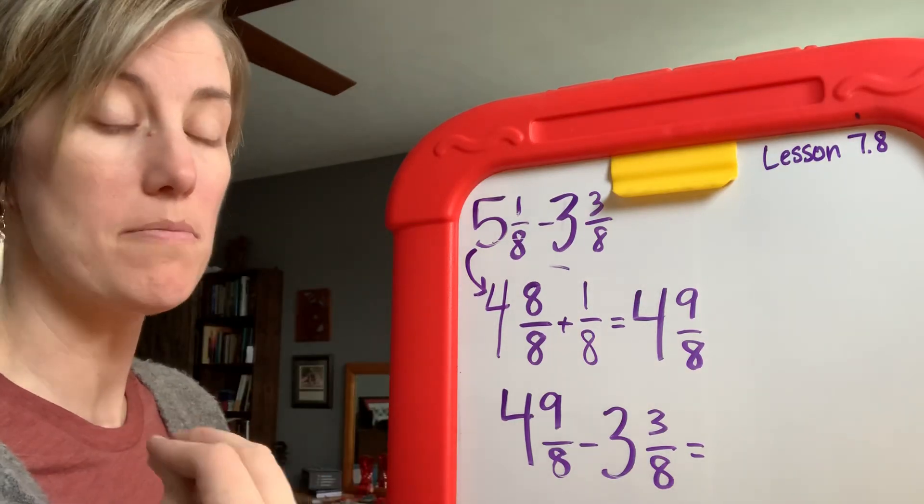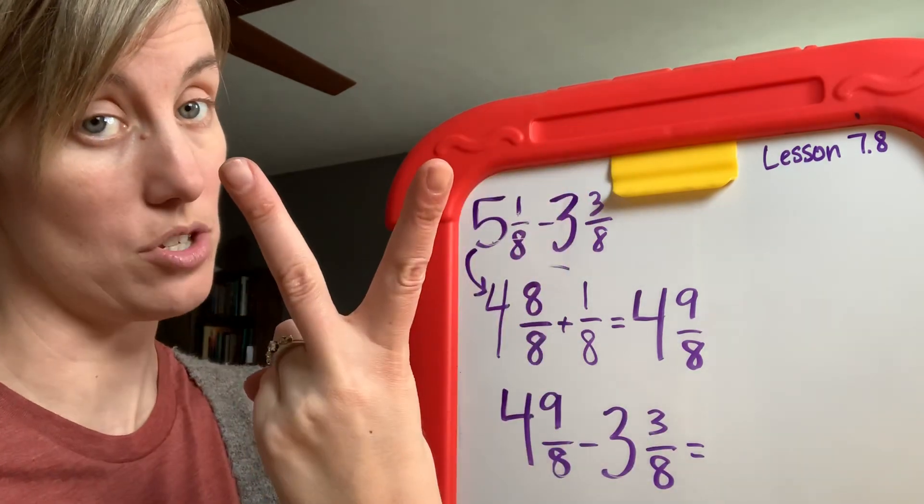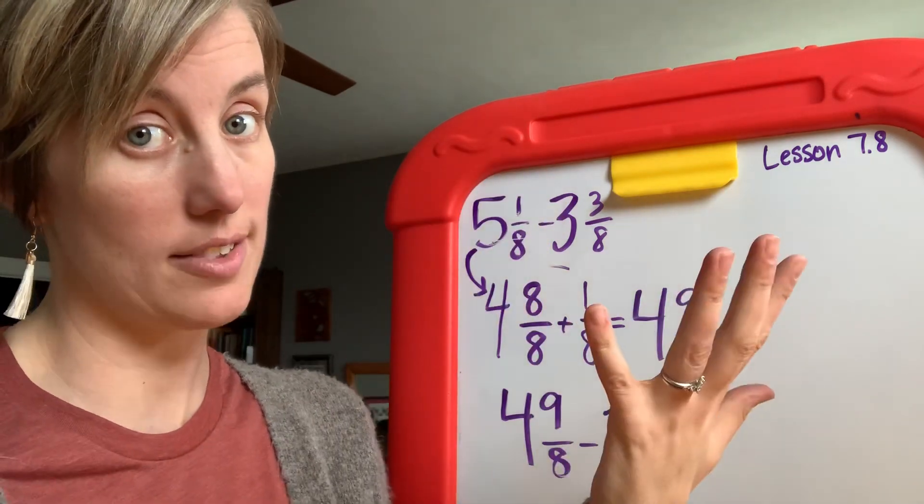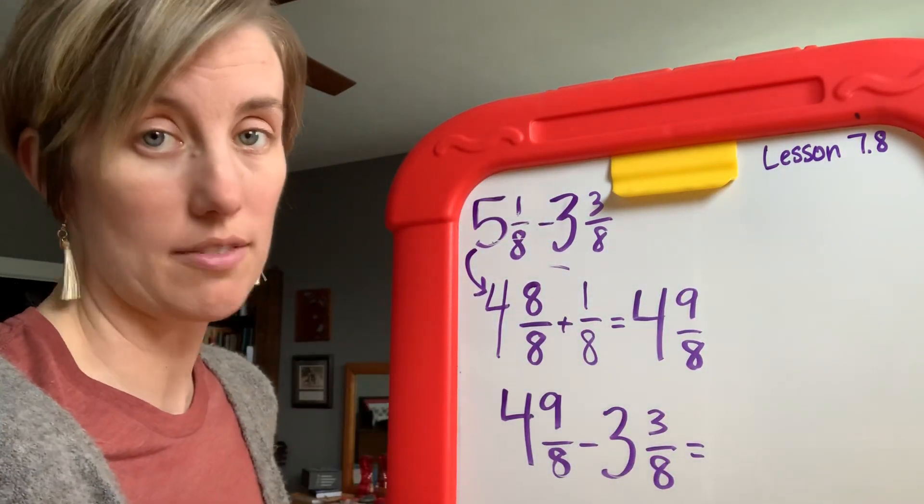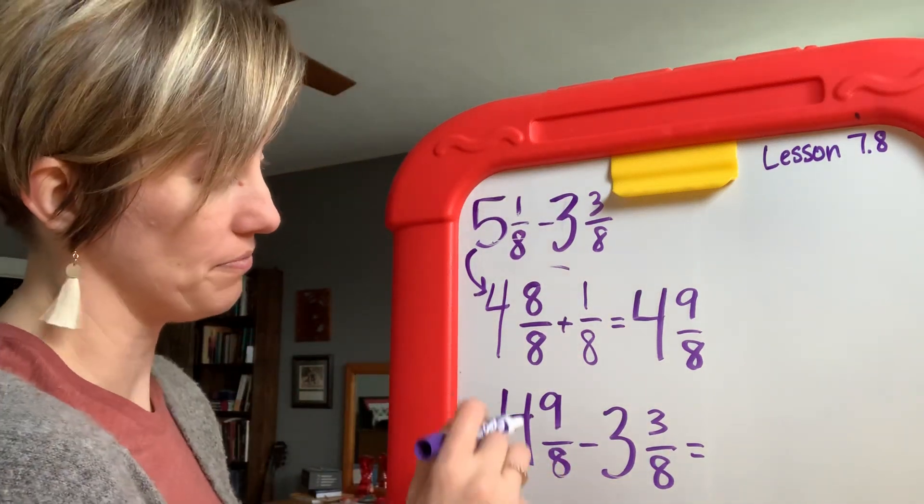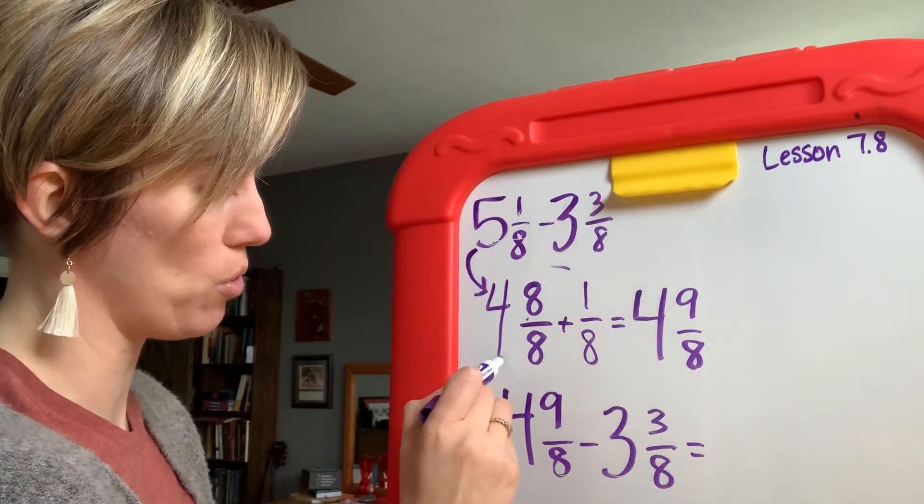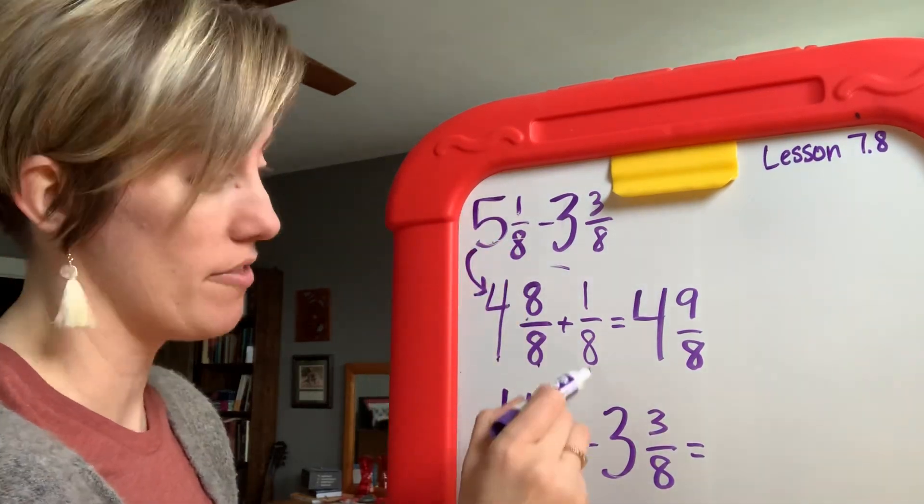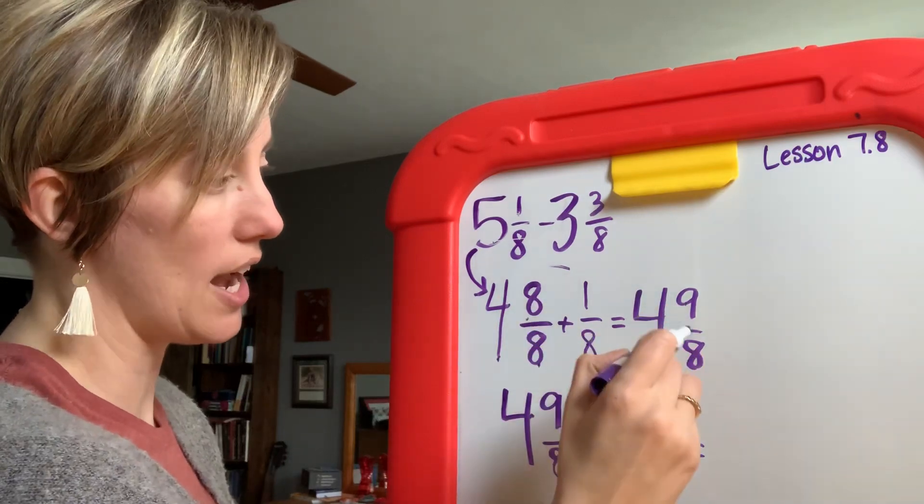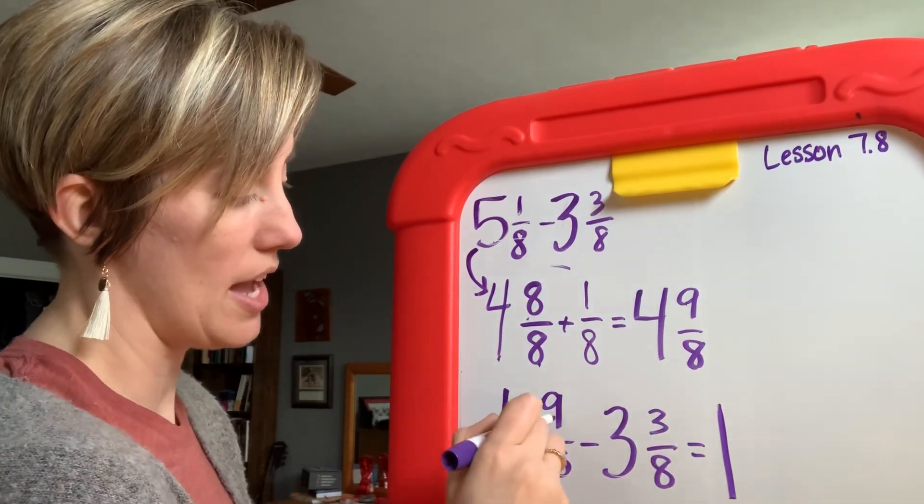So I have one minus three which is impossible. When you know you have one, you can't, one minus three is not two. Now three minus one is two, but one minus three is not a thing, right? So you cannot just take the shortcut route and put a two because that's going to be incorrect. So that is why you have to rename these things. So I have renamed this to 4 and 1 which is the same as 5 and 1/8, which is the same.